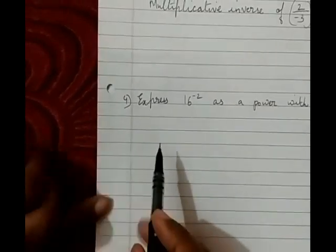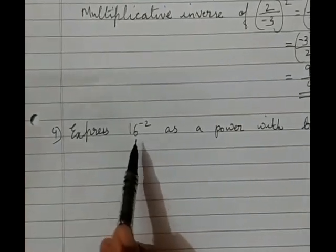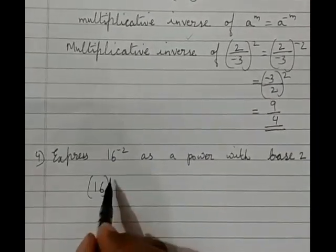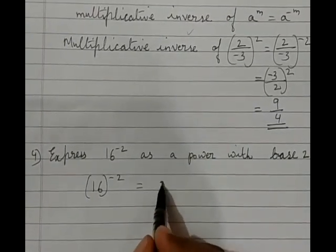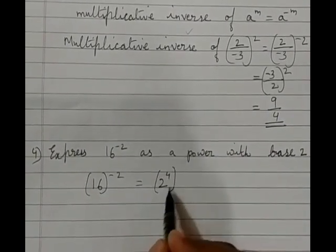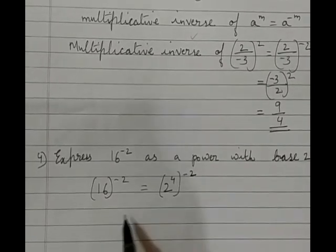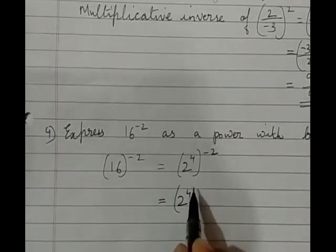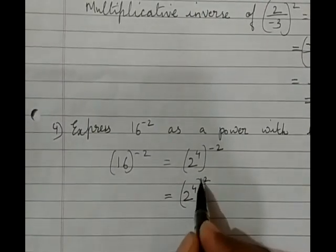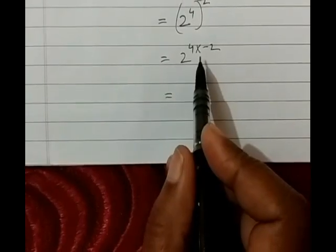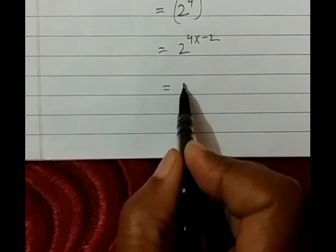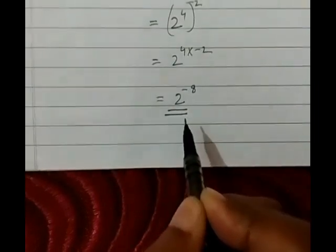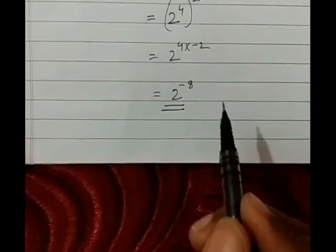Another question: express 16 to the power minus 2 as a power with base 2. So, 16 to the power minus 2 equals 2 to the power 4 whole to the power minus 2. We know that 2 to the power 4 is 16. Which equals 2 to the power 4 multiplied by minus 2, that is 2 to the power minus 8. So that is the form with base 2.